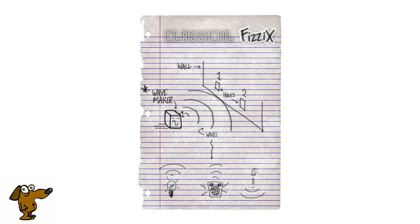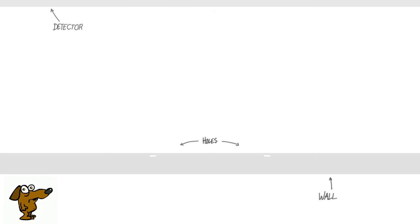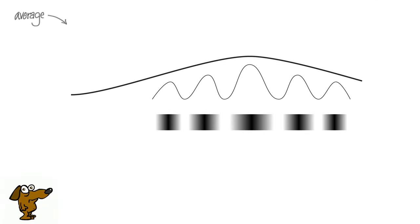Again we have a wall with holes, and beyond that some means of detection. If we run this experiment with our first hole blocked, we can expect to see the waves arriving at the detector like this. It's a distribution that looks pretty similar to our particle experiment. And with the second hole blocked, it's predictably similar.